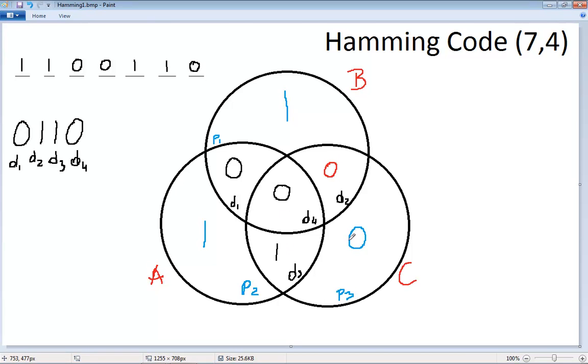So now we can look at the crossroads of the circles. And since only B and C are reporting a problem, that means everything inside of A is correct. And the problem exists inside of the D2 space, because B and C both report a problem. Therefore, we have enough information here to go ahead and correct this error. This is not a 0. This, in fact, should be a 1.